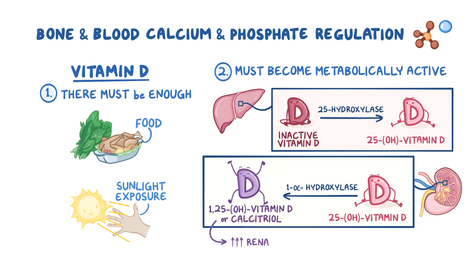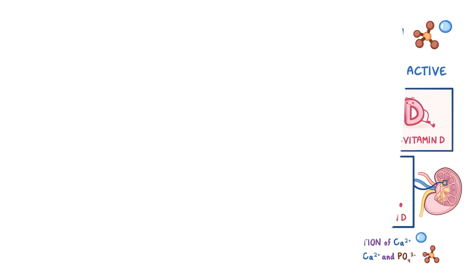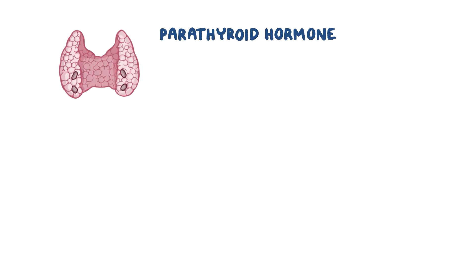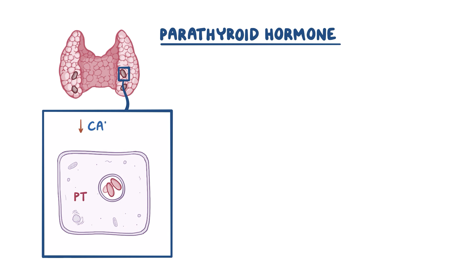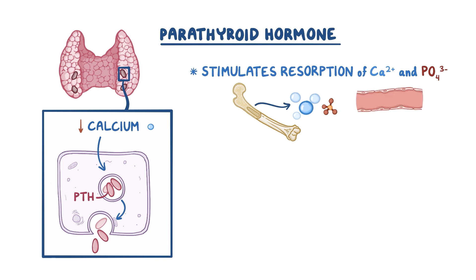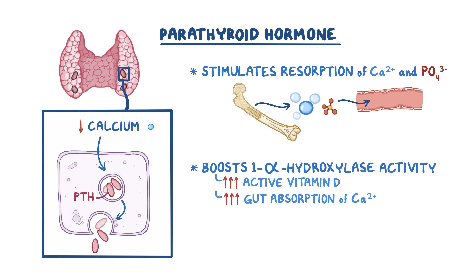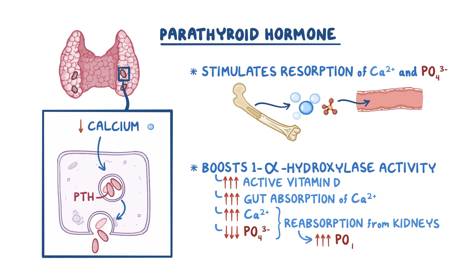Calcitriol increases renal tubular reabsorption of calcium, which reduces the loss of calcium in the urine. Calcitriol also increases the intestinal absorption of calcium and phosphate. Parathyroid hormone is secreted in response to low blood calcium levels, and it stimulates the resorption of calcium and a small amount of phosphate from the bone and into the bloodstream. Additionally, parathyroid hormone can boost 1-alpha-hydroxylase activity, which forms more active vitamin D, increasing gut absorption of calcium. Lastly, parathyroid hormone increases calcium reabsorption and reduces the reabsorption of phosphate from the kidneys, so more phosphate is excreted through the urine.